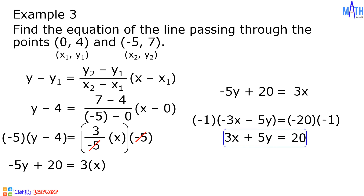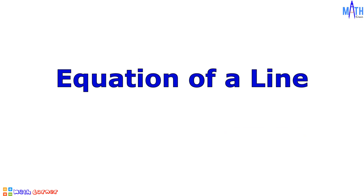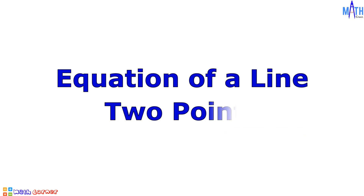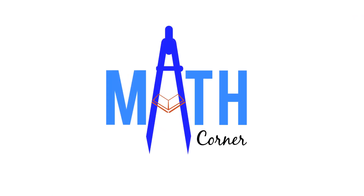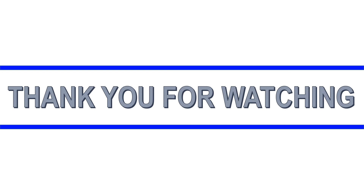And this is the equation of the line passing through the points 0, 4 and negative 5, 7. And that is how to find the equation of a line given 2 points. That's all for this video. Thank you for watching.